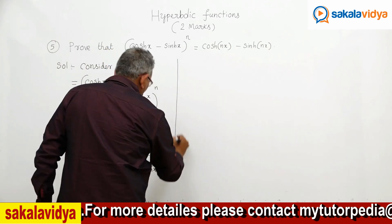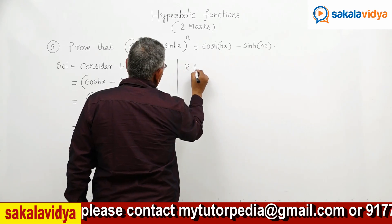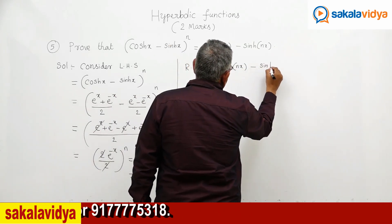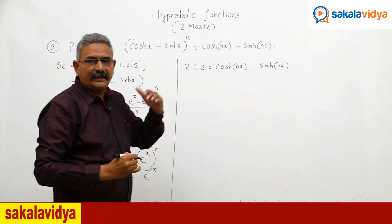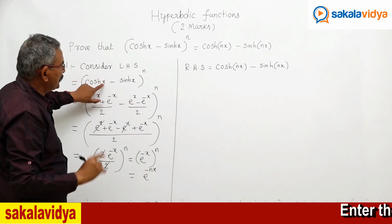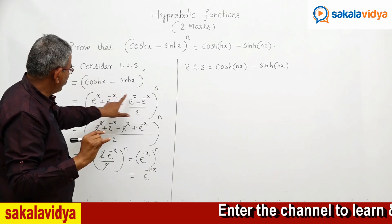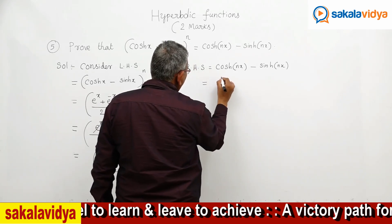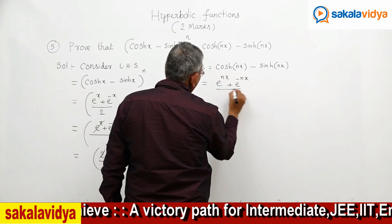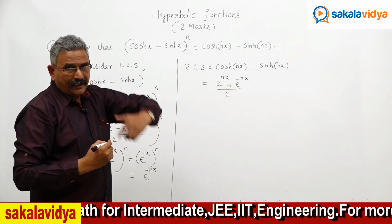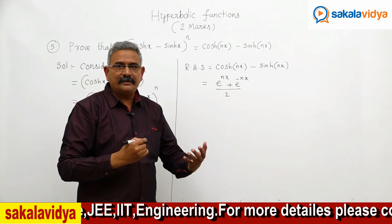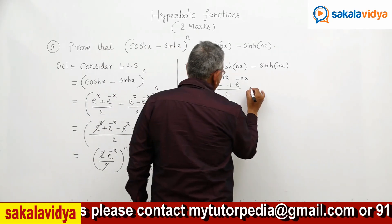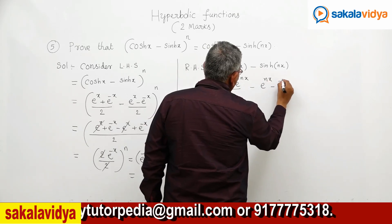Now let us consider the right hand side, which is cosh(nx) - sinh(nx). For cosh(nx), we use the cosh x formula and replace x with nx. So cosh(nx) equals (e^(nx) + e^(-nx))/2. Similarly, replacing x with nx in the sinh x formula gives sinh(nx), so we subtract (e^(nx) - e^(-nx))/2.